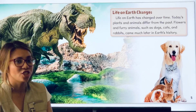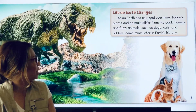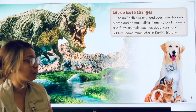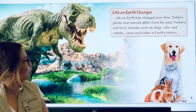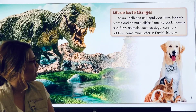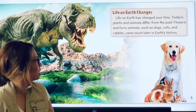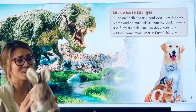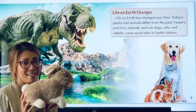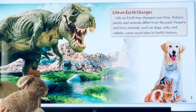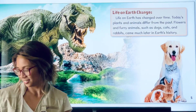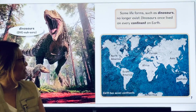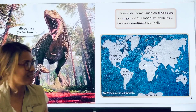Life on Earth changes. Life on Earth has changed over time. Today's plants and animals differ from the past. Flowers and furry animals, such as dogs, cats, and rabbits, came much later in Earth's history. So this cute little bunny did not exist with the dinosaurs. Some life forms, such as dinosaurs, no longer exist.